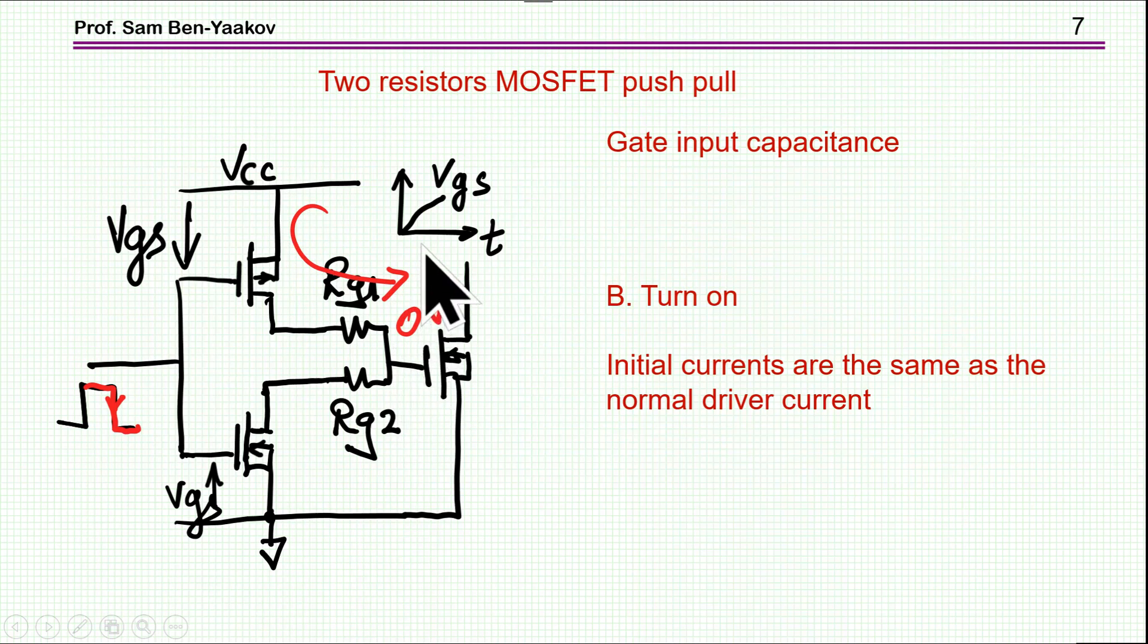Now, as long as it's zero here, or it's close to zero, the current here is very small. Meanwhile, the transition is over, and this transistor is on, and this is off, and that's the end of the story. So, in this case, with an input capacitance, the situation is actually much better.